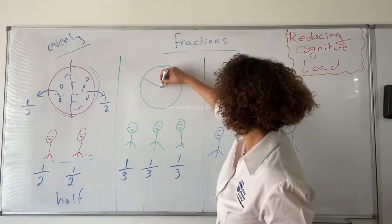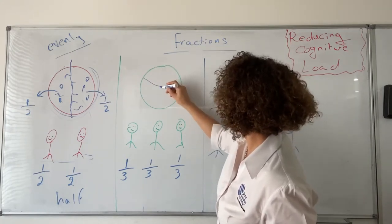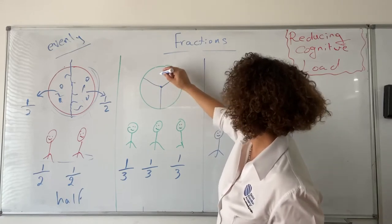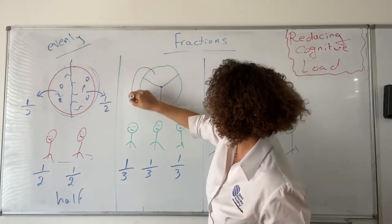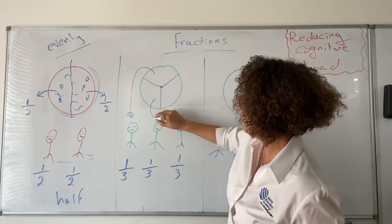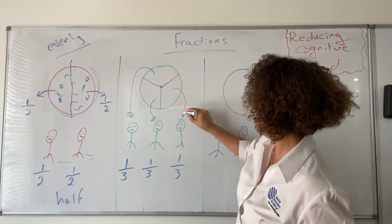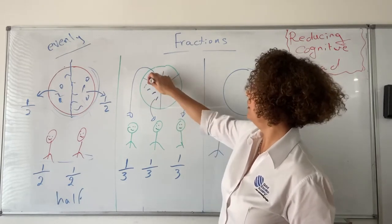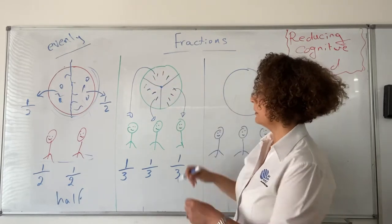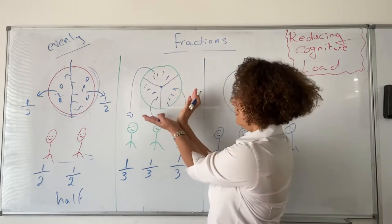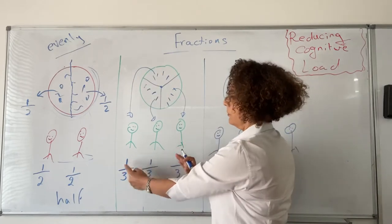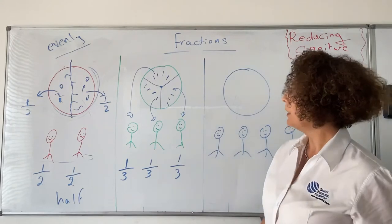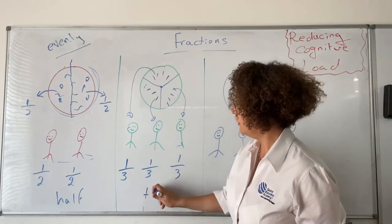We cut it into one, two, three pieces. So this person will get this piece, this person will get this piece, and this person will get this piece — one out of three for each one of them. Sharing one thing between three people, each one will get one out of three. This is what we call a third.